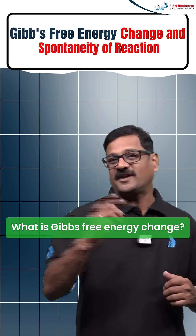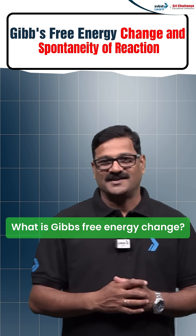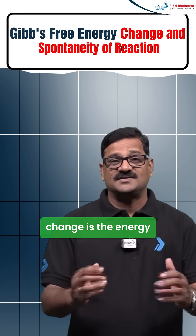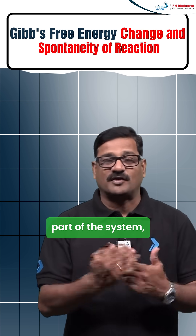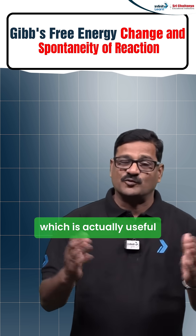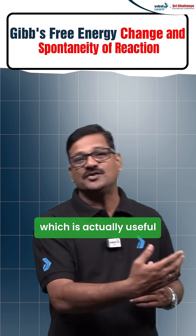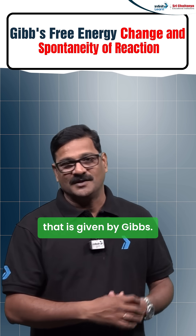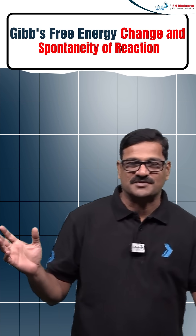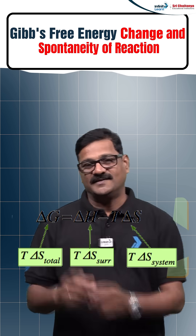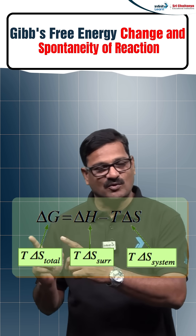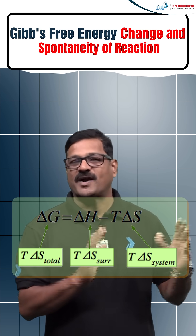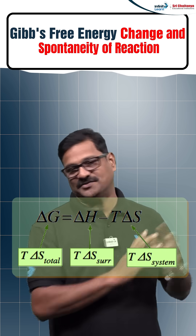Hi students, what is Gibbs free energy change? Gibbs free energy change is the energy part of the system which is actually useful for the work done. That is given by the Gibbs-Helmholtz equation: delta G is equal to delta H minus T delta S.